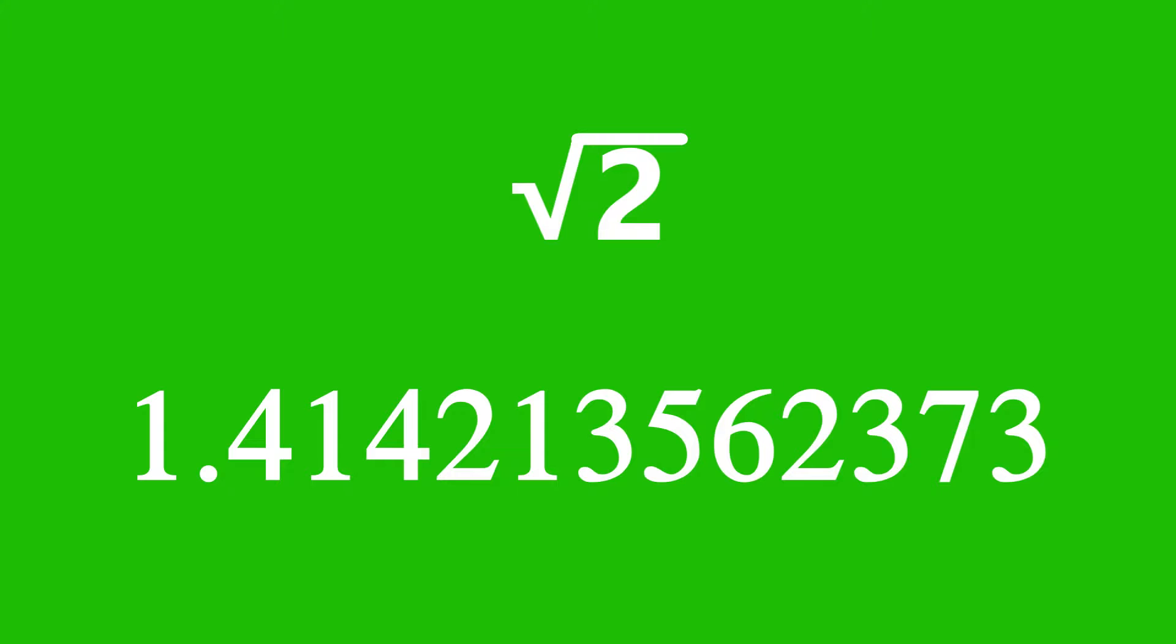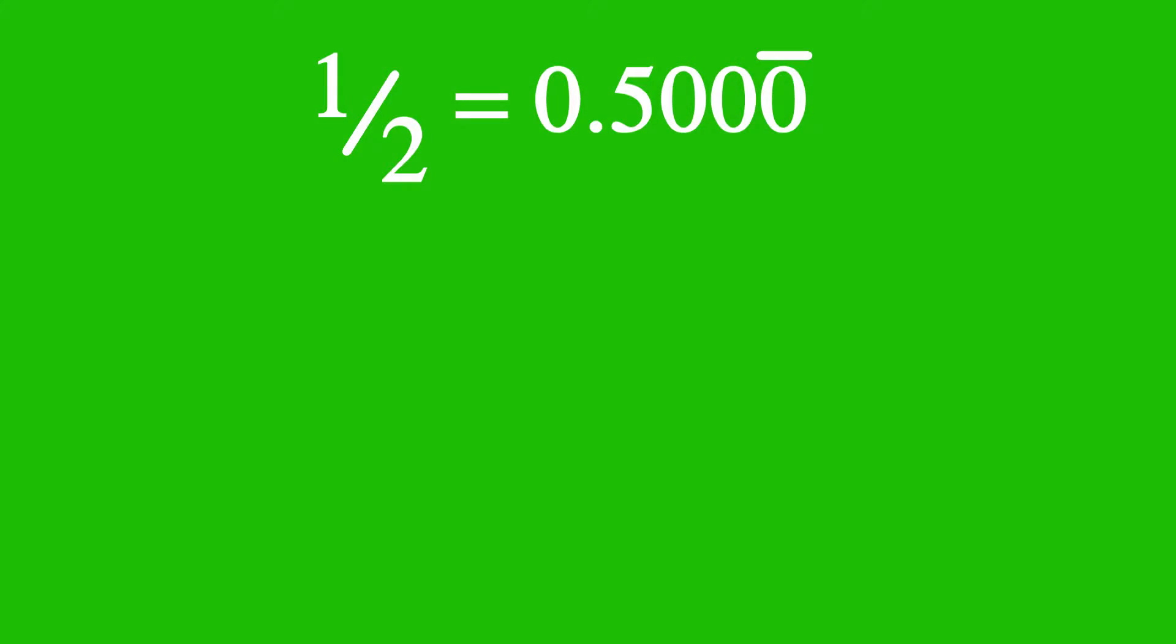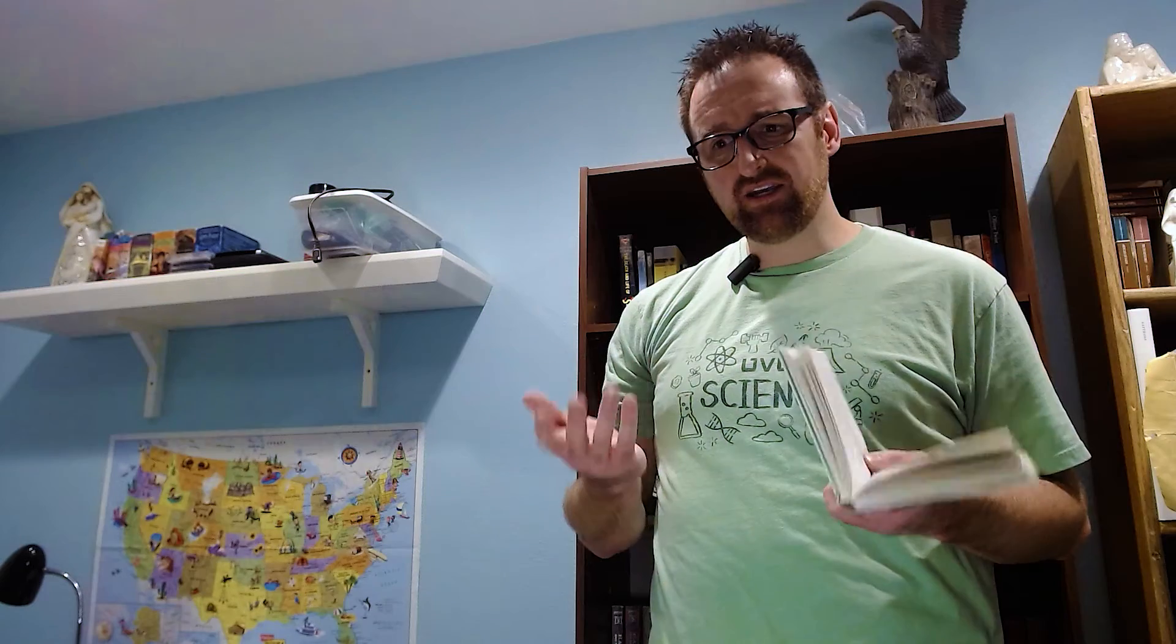For example, the square root of two has the same property. In fact, every irrational number has this property. A rational number, if you remember, is a number that can be written as the ratio of two integers. An irrational number is one that can't be. Curiously, we can prove that rational numbers are precisely those that have a decimal representation that eventually repeats forever, and that irrational numbers are the ones that don't.